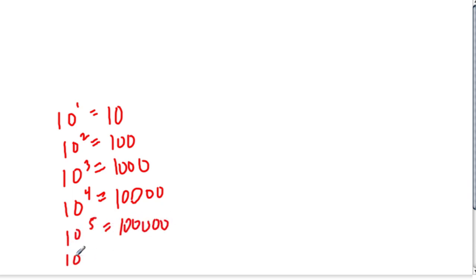Now you might be wondering what I'm doing here. Maybe you see a pattern. How do I instantly know that 10 to the 6th is a million? Look at this. Each zero matches the exponent.